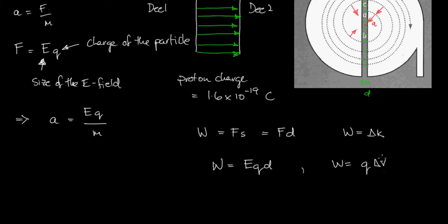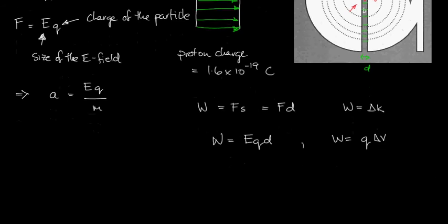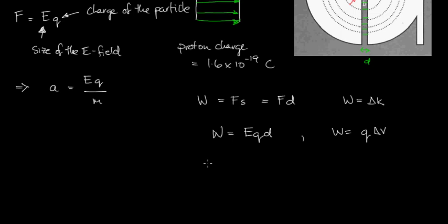For my students, these formulas are on your formula sheet. So I can define then from those two formulas there, I can say q delta V equals EqD. Cancel the two charges, the charge doesn't matter here, and we're left with E equals delta V on D.